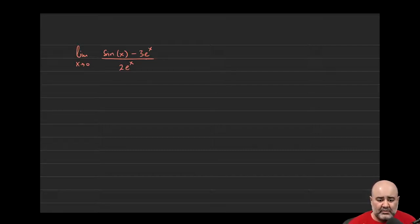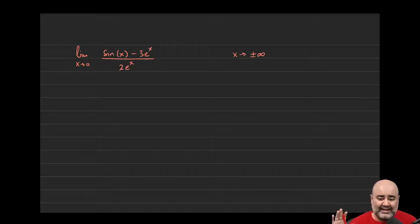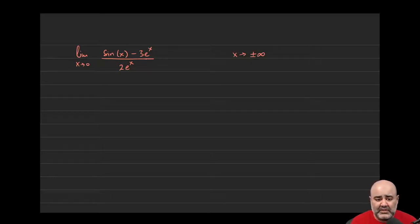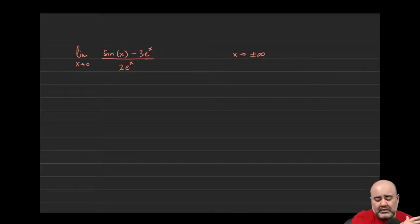Dominating term arguments can only be used if x is approaching infinity or negative infinity. Please do not use relative rates of growth if x is approaching anything other than positive infinity or negative infinity. Those are the only two things we care about, because when we're finding relative rates of growth, we're looking at end behavior. We don't care about what happens at x equals 0 or x equals a million — we care about what's happening as the function goes all the way out to positive or negative infinity.